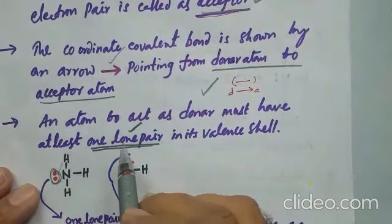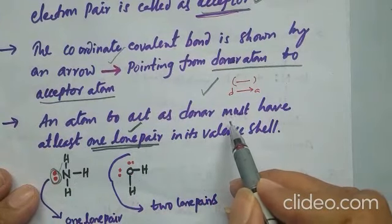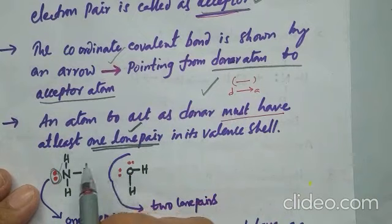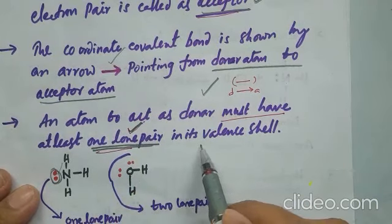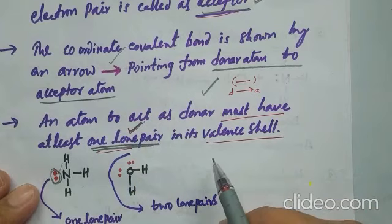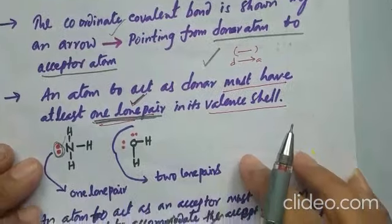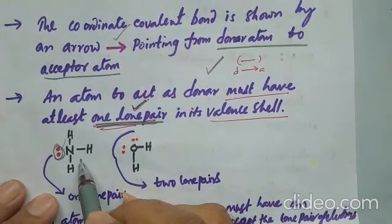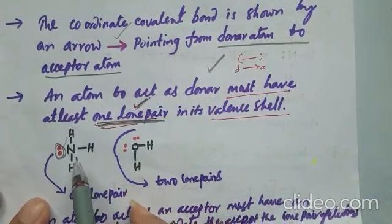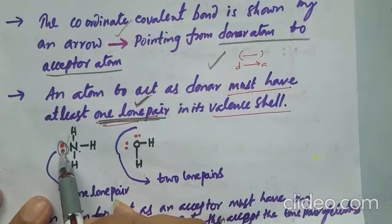An atom to act as donor must have at least one lone pair in its valency shell. So the donor should contain at least one lone pair. Here, see the example ammonia, NH3. In this, nitrogen is the central atom having...